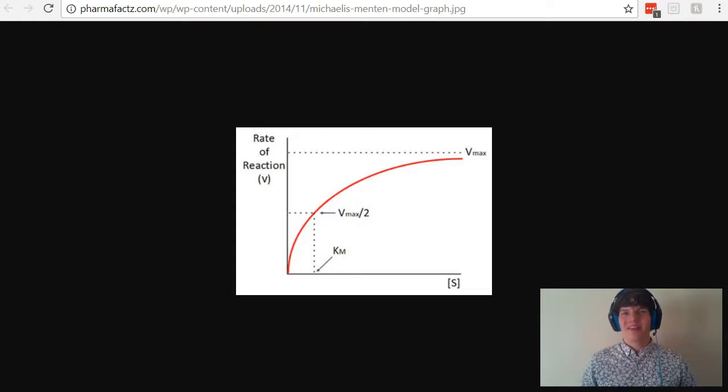Here we have a typical Michaelis-Menten kinetics graph. And if you look here, you'll see this red line is slowly approaching the Vmax. Now to find the Km value, you want to divide the Vmax in half, then go over to the line, and then down to the x-axis.